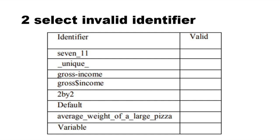This is a special character, which makes this a different indicator. If you want to use a keyword, then you can use a keyword to identify. If you want to use a special character or gross income, then it becomes invalid.